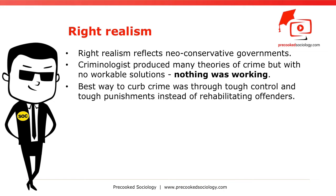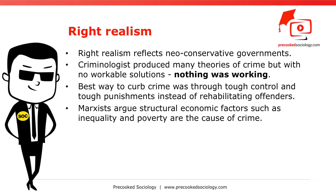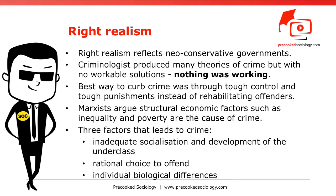Marxists argue that structural economic factors, such as inequality and poverty, are the cause of crime. Right realists reject this idea put forward by Marxists, and instead argue there are three factors that lead to crime: inadequate socialization and development of the underclass, rational choice to offend, and individual biological differences.